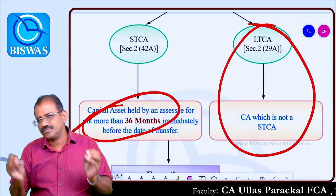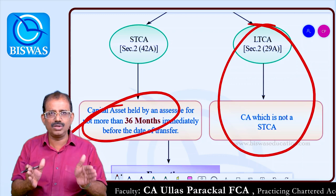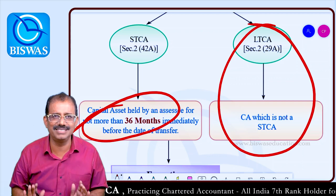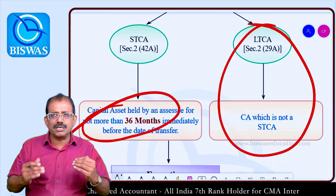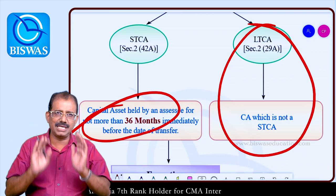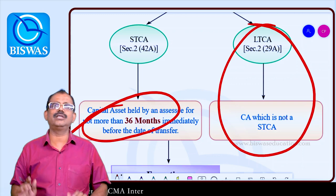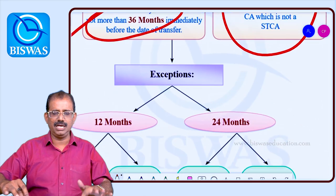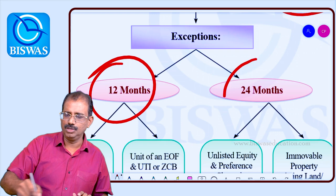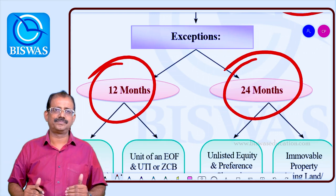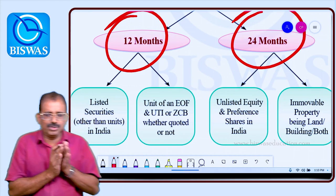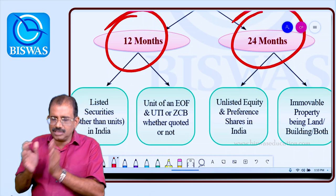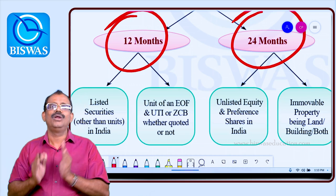In any capital asset, if held up to 36 months, it is a short-term capital asset. In every capital asset, it is 36 months — except in specified cases. In those specified cases, it is a short-term capital asset if held for less than 24 months or 12 months. Beyond that, it becomes a long-term capital asset.